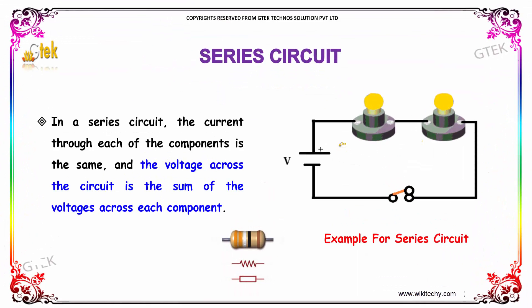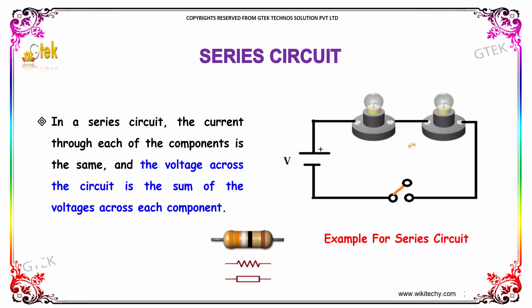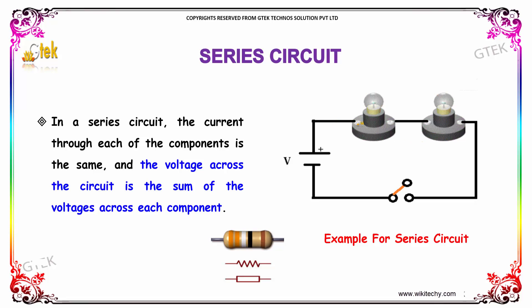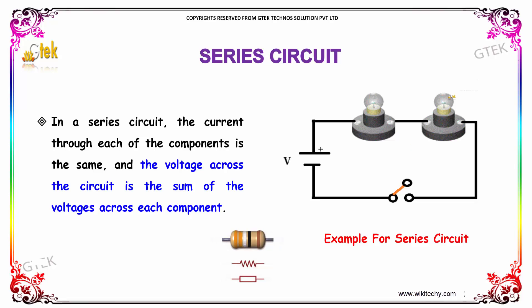In a series circuit, the current through each of the elements is the same, and the voltage across the circuit is the sum of the voltages across each component. So, the current is the same and the voltage will be different. The total voltage is the sum of the individual voltage of each component.